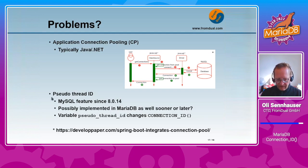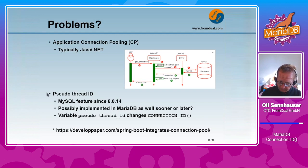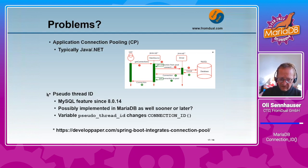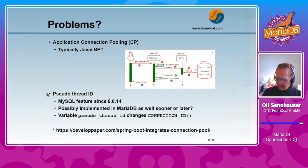Then another thing that's quite new — it does not yet happen in MariaDB but possibly it will happen in the future. In MySQL since version 8.0.14 there is a variable called pseudo_thread_id. Possibly this will be implemented in MariaDB as well, sooner or later. I did not yet find out what the use case of this variable really is, but maybe other people know better.